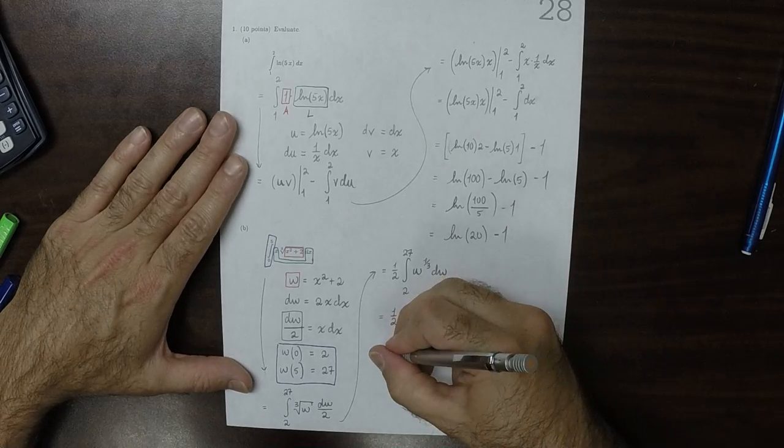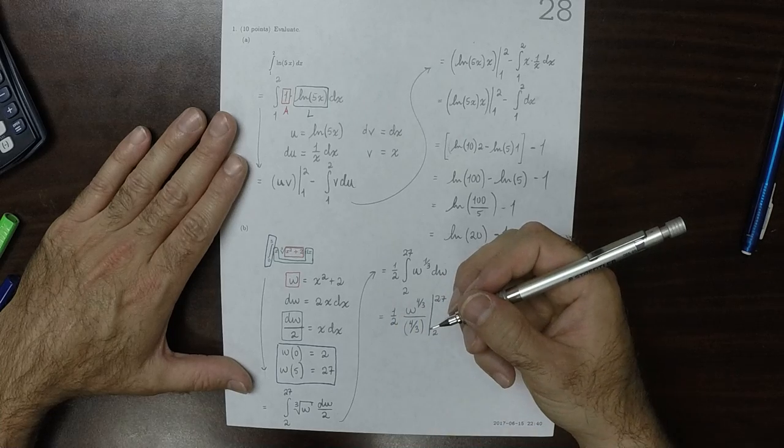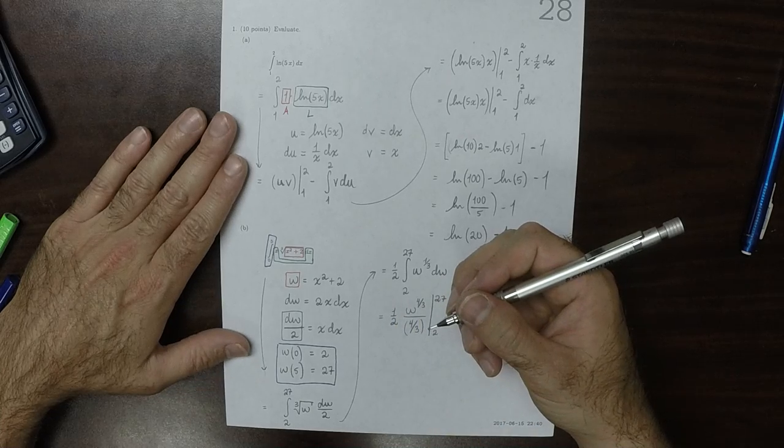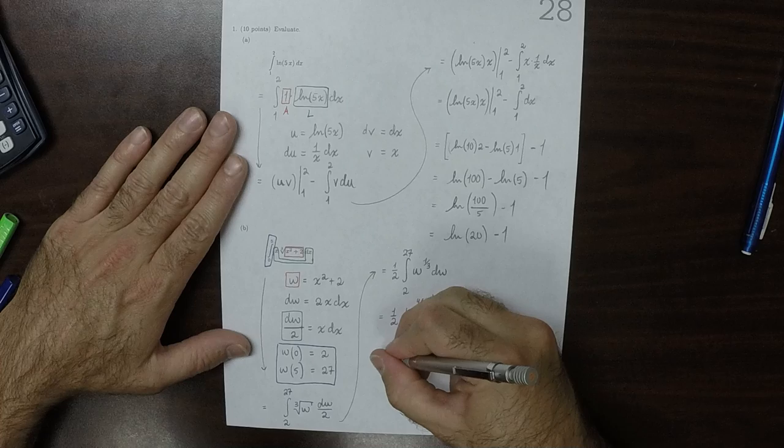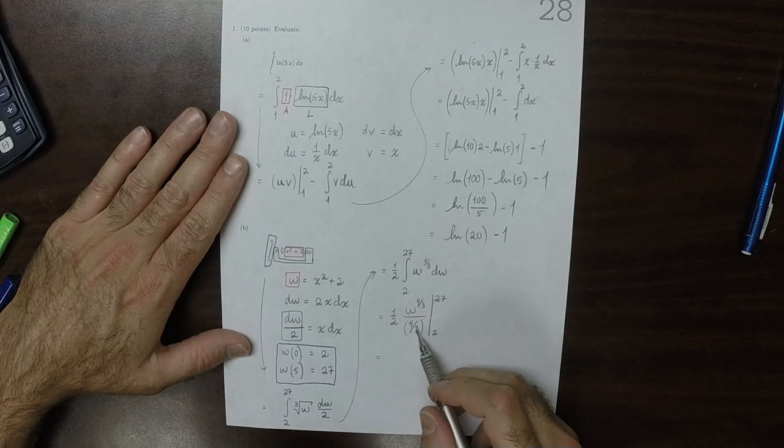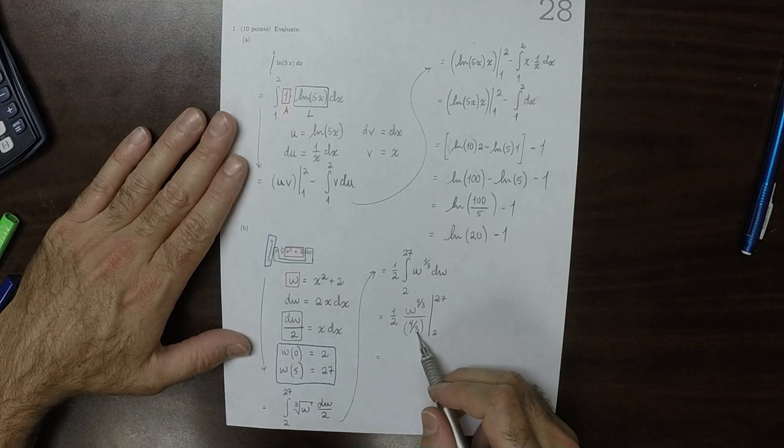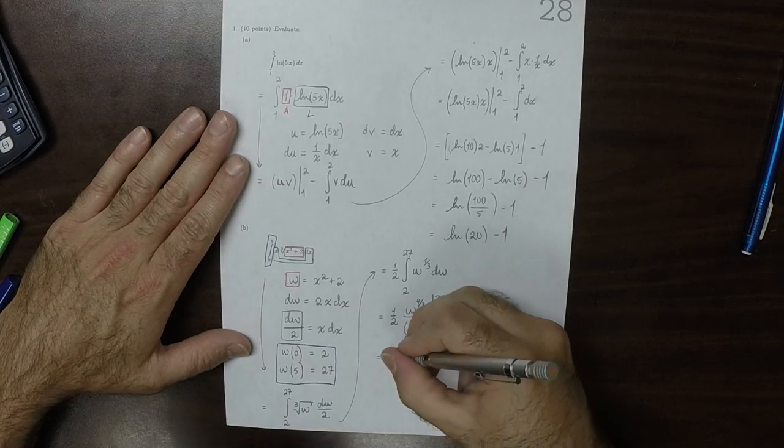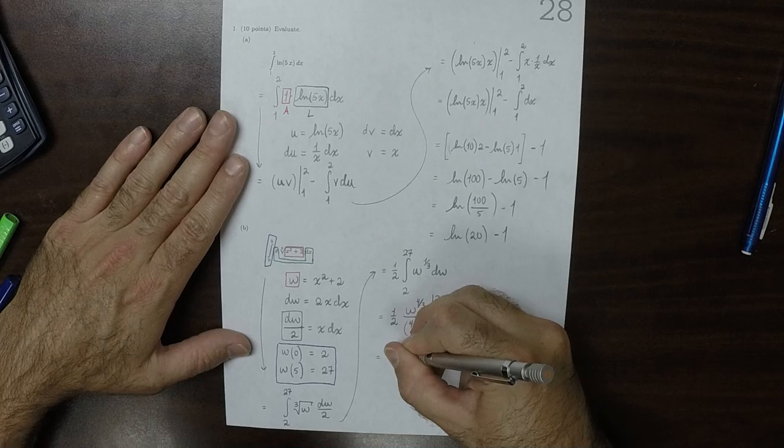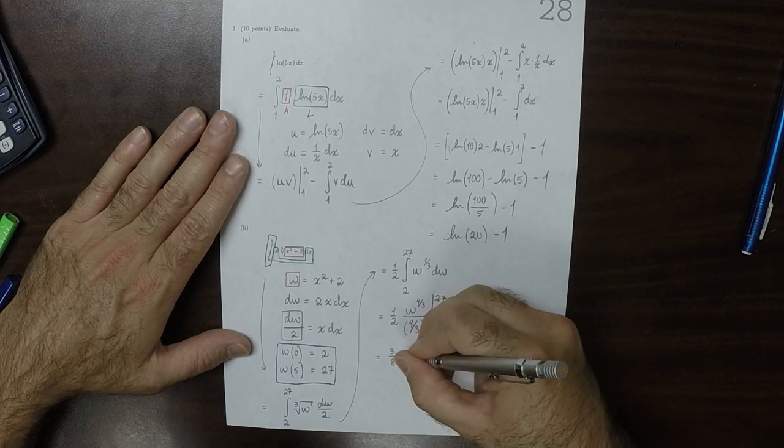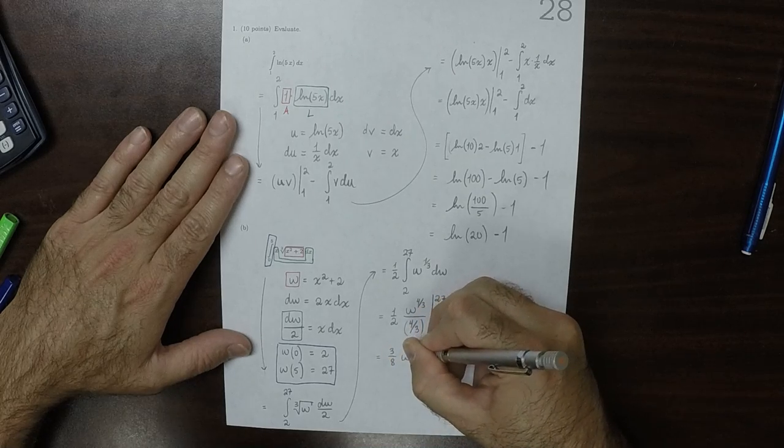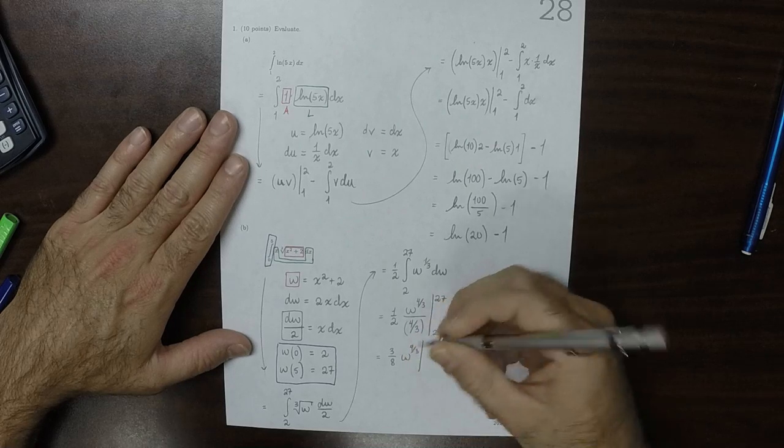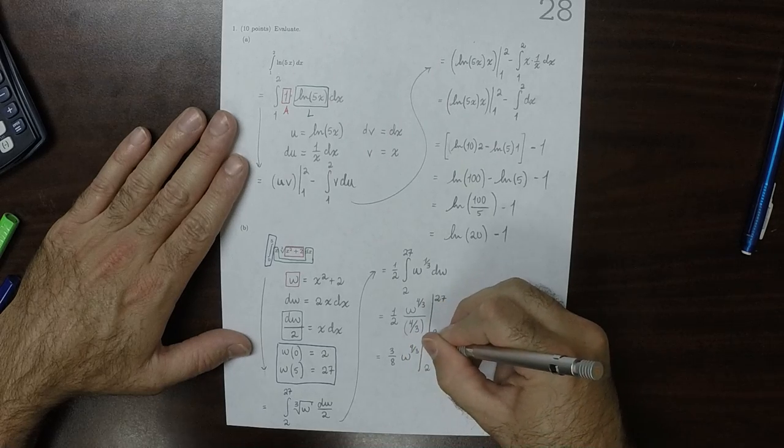And then simplifying this a little bit, division by 4 thirds is same as multiplication by 3 fourths. So this would be 3 over 8, w to 4 thirds, and then from 2 to 27.